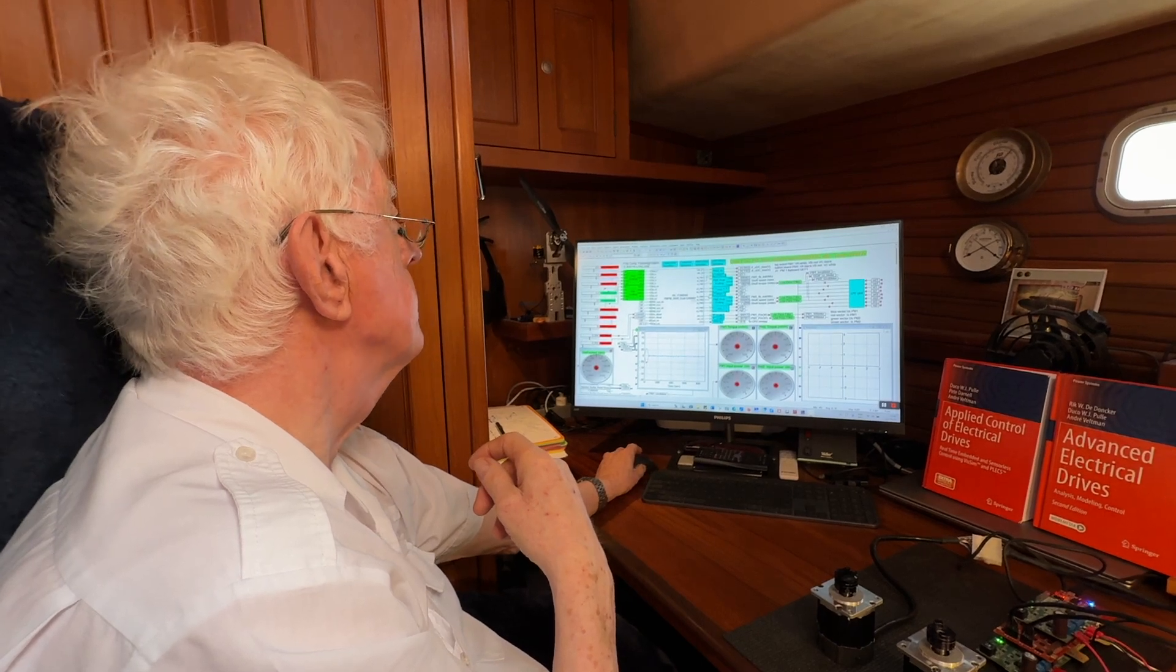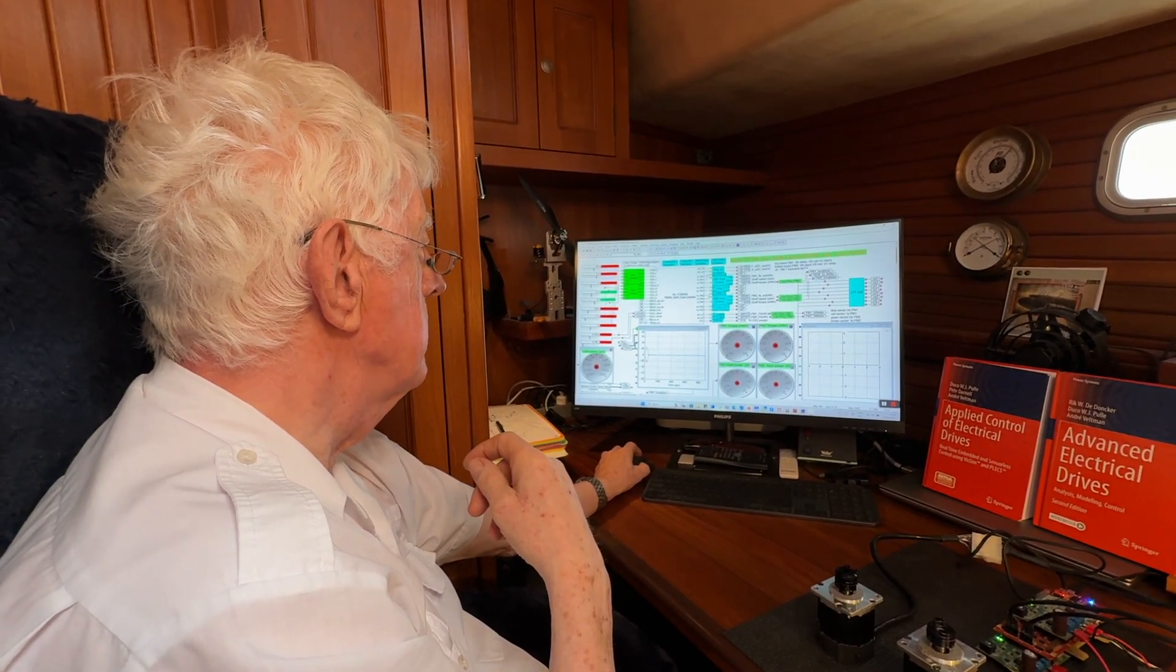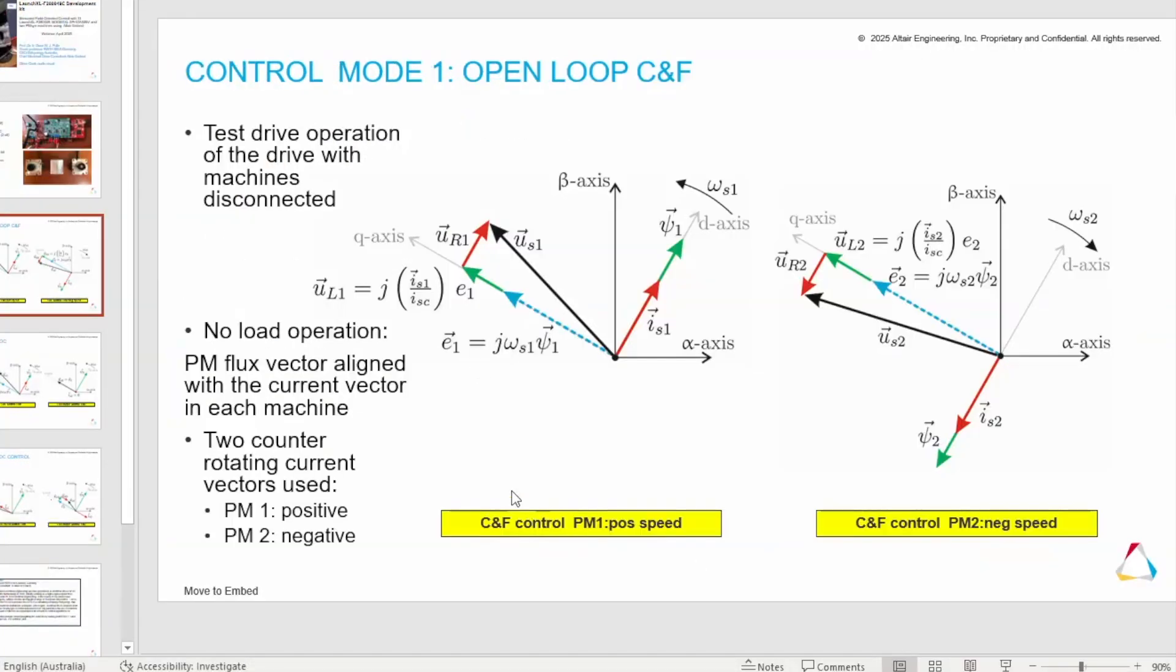We move now to the first step, and our first mode of operation: open loop current control. It means basically that both machines are operating with rotating current vector IS1, and in this case IS2. One is a positive direction, anticlockwise, and the second one is operating negative with IT2. In the controller, we will see DQ. So the D-DQ axis is what we will see in the controller for both. Here you're seeing stationary coordinates. You also see the voltage vector, which is built up of the EMF, volts across the inductance and across the resistance for both cases.